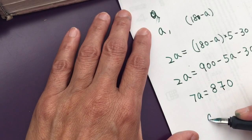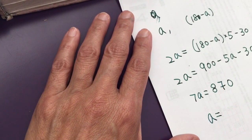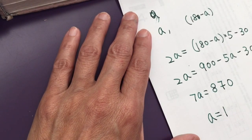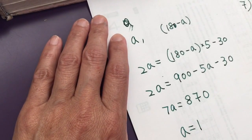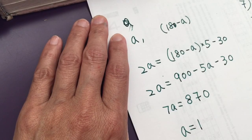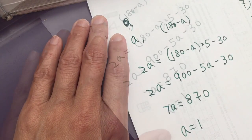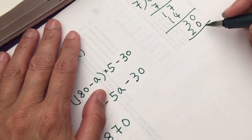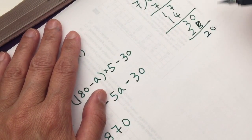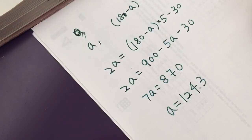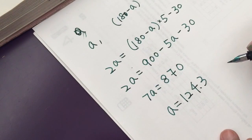So A equal to about 10870 divided by 7. So the calculation is about 124.3 something. This is the measurement of the angle.